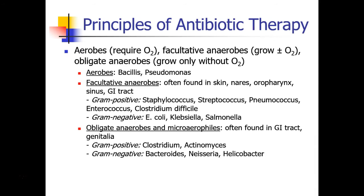There are yet other ways that we can classify the different bacteria that we encounter. First, we can speak about aerobic bacteria, which are bacteria that require oxygen to survive. We can also talk about facultative anaerobes, which are bacteria that can grow with or without oxygen, and obligate anaerobes, which only grow in the absence of oxygen.